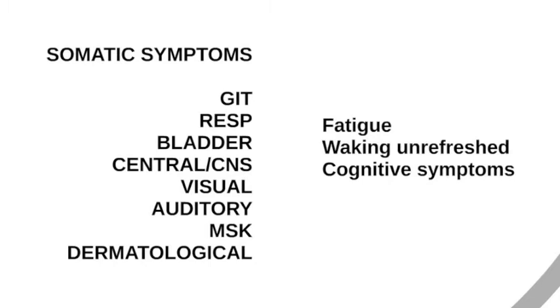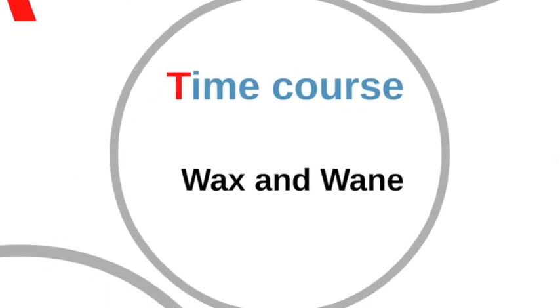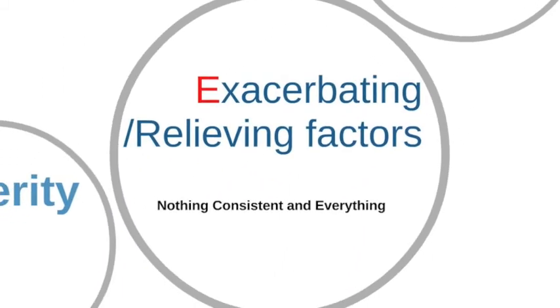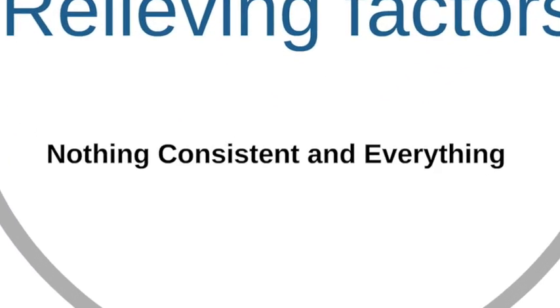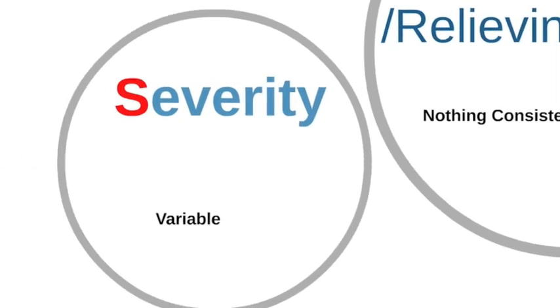Somatic symptoms can come from the GI tract, respiratory system, bladder, and CNS — there are also visual, auditory, musculoskeletal, and dermatological symptoms. Non-somatic symptoms include fatigue, waking unrefreshed, and cognitive symptoms. The pain does not change through the day in any set pattern; it waxes and wanes but a consistent pattern is difficult to define. Similarly, exacerbating and relieving factors are not consistent — unlike pain associated with mechanical or inflammatory problems — and many things can exacerbate the pain. Severity is variable from time to time and throughout the day.